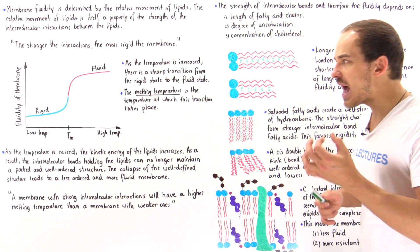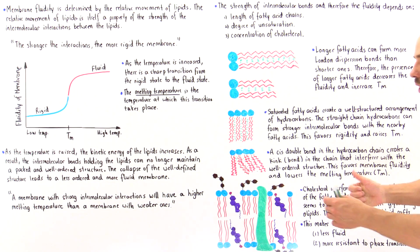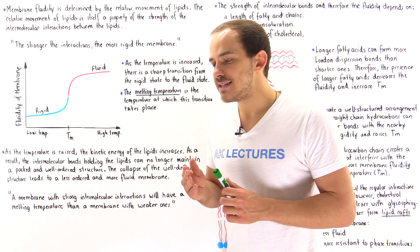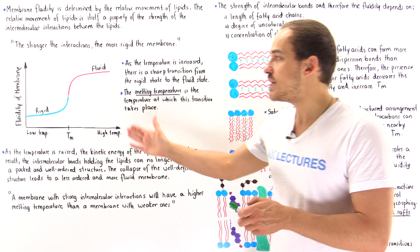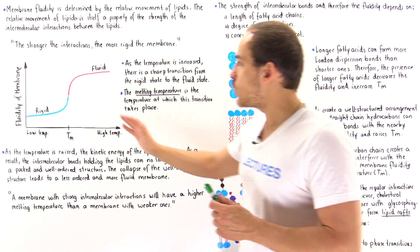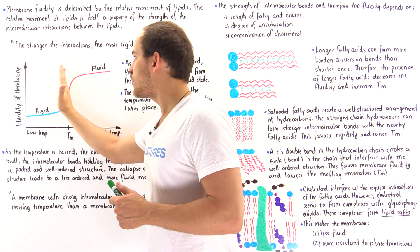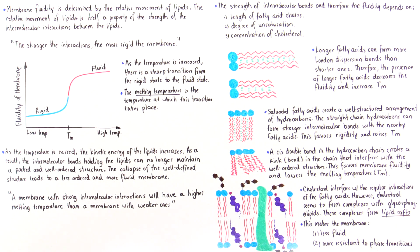On top of that, even though the membrane is more rigid in the presence of cholesterol, lipid rafts and cholesterol in general also increase the membrane's resistance to the phase transition described earlier. Instead of a steep transition slope on the graph, the slope becomes slightly flatter, meaning the membrane is able to resist these phase transitions.